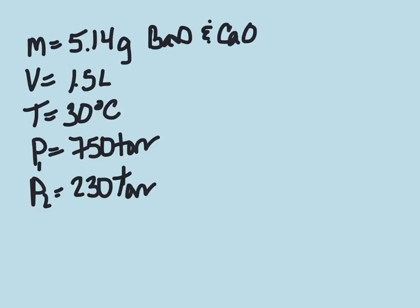For this problem, we are told that a chemist lays out 5.14 grams of a mixture containing unknown amounts of BaO and CaO, and they're placed in a 1.5 liter flask that contains carbon dioxide at 30 degrees Celsius and 750 torr. After a reaction that forms barium carbonate and calcium carbonate was completed, the pressure of the CO2 remaining in the flask is 230 torr, and we're trying to calculate the mass percentages of calcium oxide and barium oxide in the mixture.